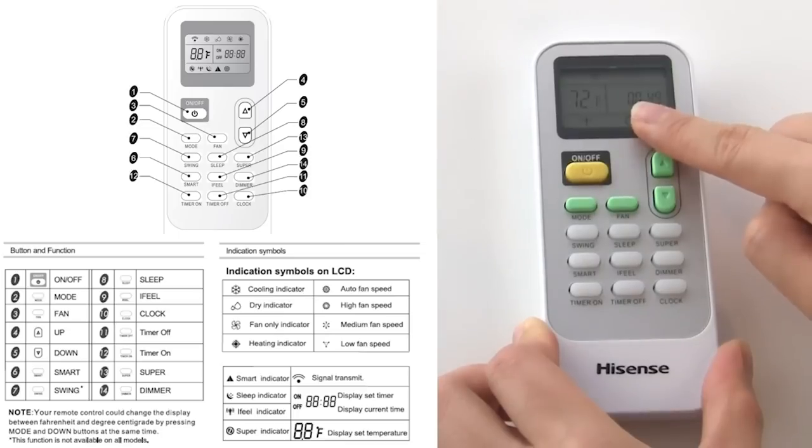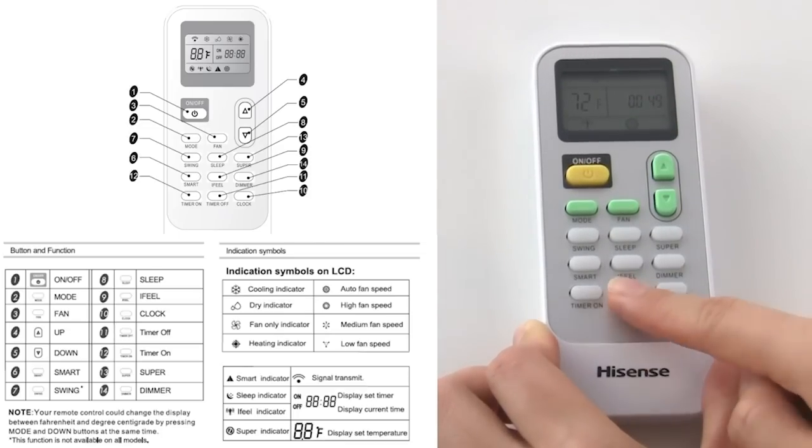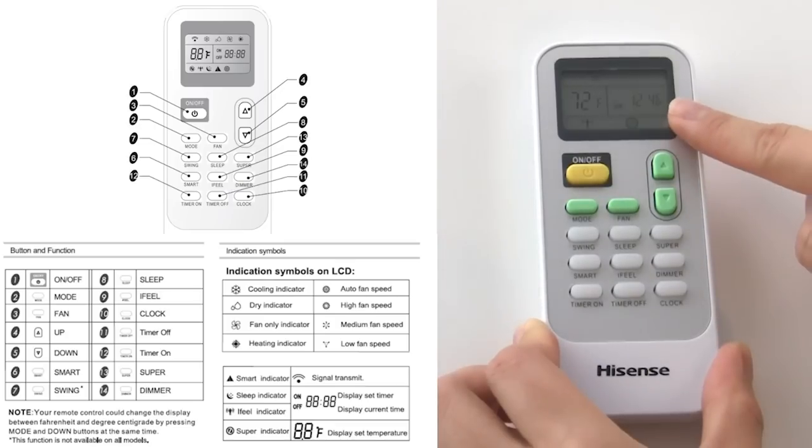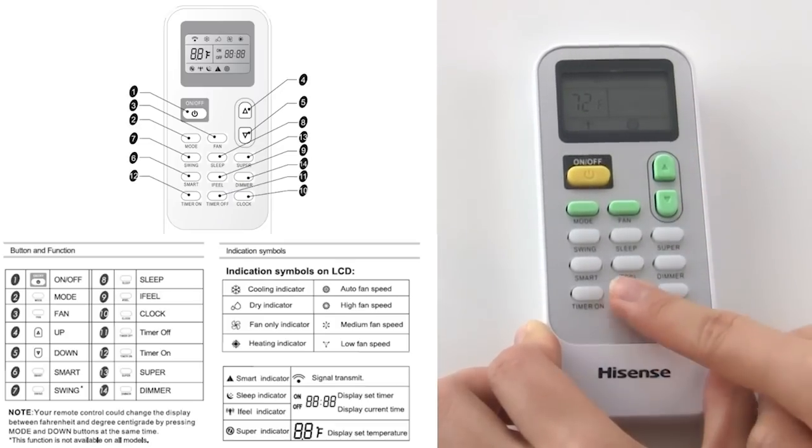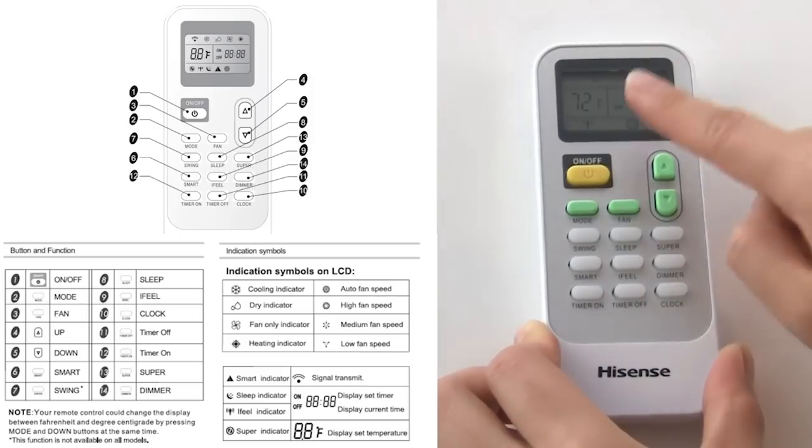Timer off is set exactly the same way as timer on. However, timer off is set when the unit is running and will set the time at which the unit will turn off.